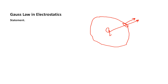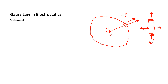The direction of the area element is always outward. For example, if I have a cylindrical structure, the direction of the area element on each face is outward. The direction of the electric field for positive charges is also always outward. The charge is placed in this hypothetical surface known as the Gaussian surface. I will discuss the derivation of Gauss's law in detail in another video lecture.